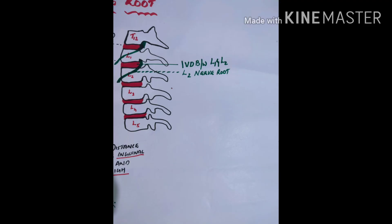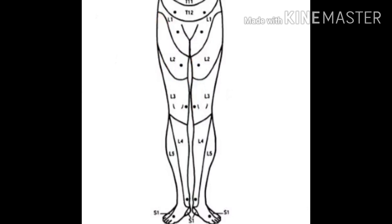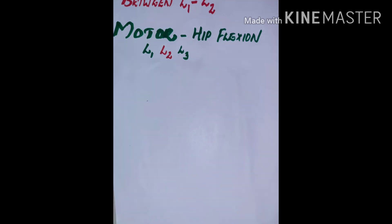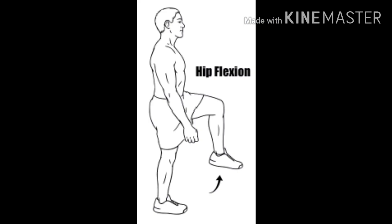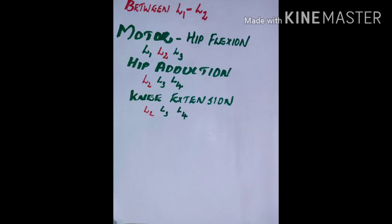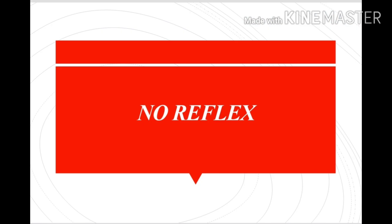Disc herniation between L1 and L2 will affect the L2 nerve root. The sensory changes of the L2 nerve root will be seen in the mid anterior thigh. There are three motor functions for the L2 nerve root: hip flexion done by iliopsoas (L1, L2, L3), hip adduction (L2, L3, L4), and knee extension by L2, L3, and L4 nerve roots. There is no reflex for the L2 nerve root.